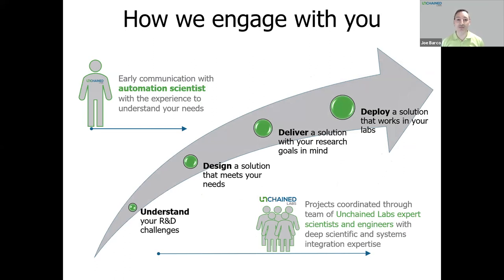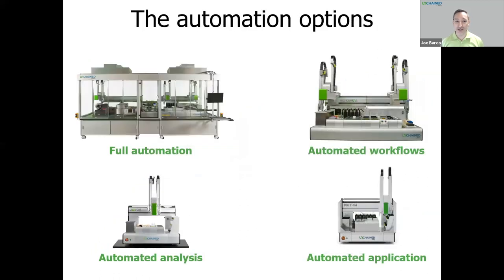We design and discuss a proposed system with you and align to ensure that we fully understand your needs. While your system is assembled, we may have more detailed discussions to make sure we're all aligned. Then, of course, we deploy the system with training from our applications team. These options are fit for purpose — fully integrated workflows like two Big Kahunas attached together, smaller integrated workflows, task-driven systems like the Junior, or defined automation systems such as Big Tuna.